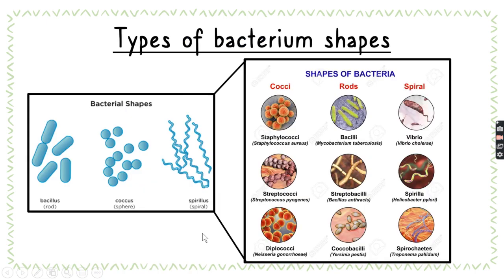There are three types of bacteria depending on their shape. You have the bacillus, or rod shape. You have the coccus, or spherical shape. And you have the spirillus, or spiral shape. So you can call them rod, sphere, and spiral, or bacillus, coccus, and spirillus.